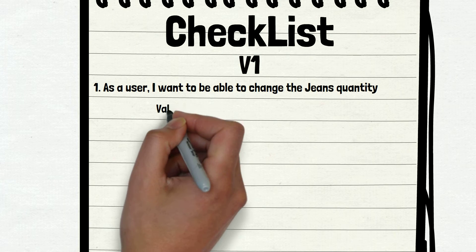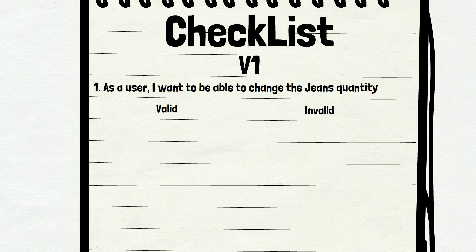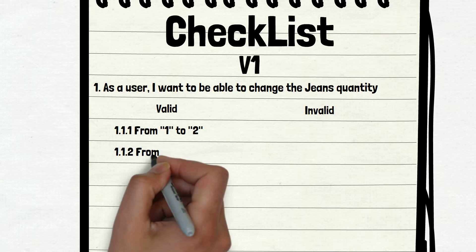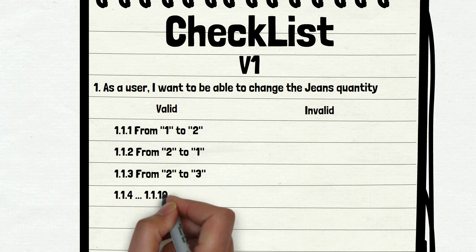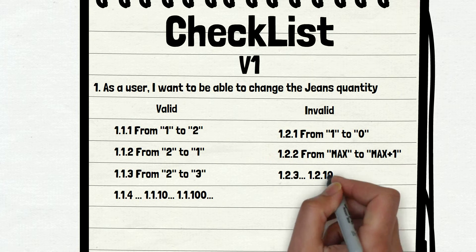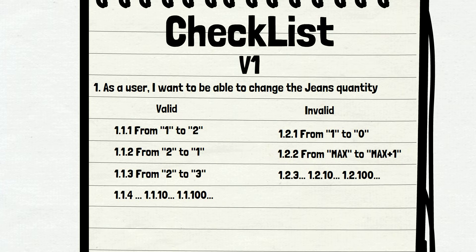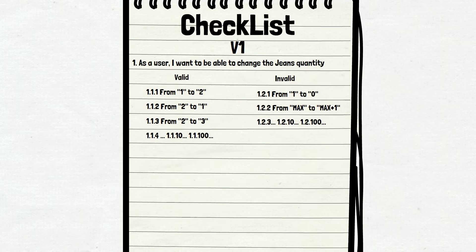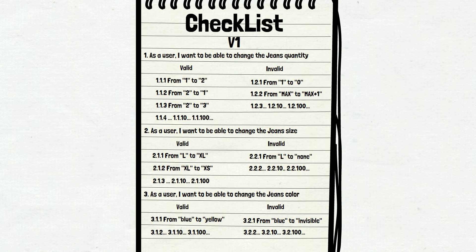The checklist starts with the user story: as a user, I want to be able to change jeans quantity. We write valid and invalid, or positive and negative test scenarios — the user changes the quantity from 1 to 2, from 2 to 1, from 2 to 3, and a lot more scenarios. Most likely equivalence partitioning and boundary value analysis test techniques will help you write this properly, but that is the theme of another video. We have more user stories related to the cart page and more test cases for those, and all of these were run when we tested the first version of the cart page.